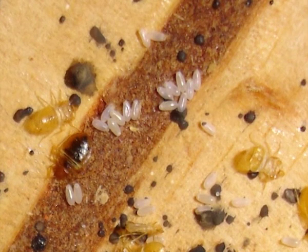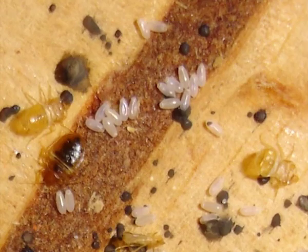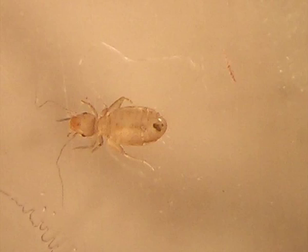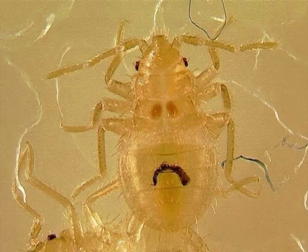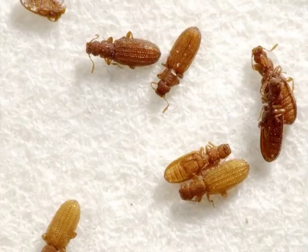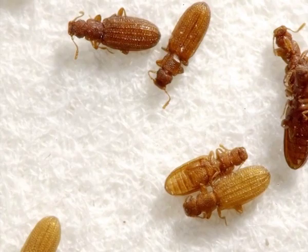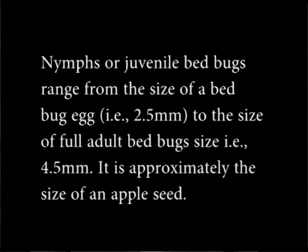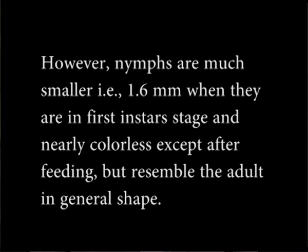Eggs are small in size and measure around 2.5 millimeters. They are white or semi-transparent in color, and hatch into nymphs within a week. Nymph: Newly hatched nymphs are translucent or light in color. A bed bug nymph of any age that has just consumed a blood meal has a bright red translucent abdomen, fading to brown and turning opaque black within 2 days. They become browner as they moult and reach maturity. Nymphs range from the size of a bed bug egg (2.5 mm) to the size of a full adult (4.5 mm), approximately the size of an apple seed. Nymphs are much smaller — 1.6 mm — in the first instar stage and nearly colorless except after feeding, but resemble the adult in general shape.